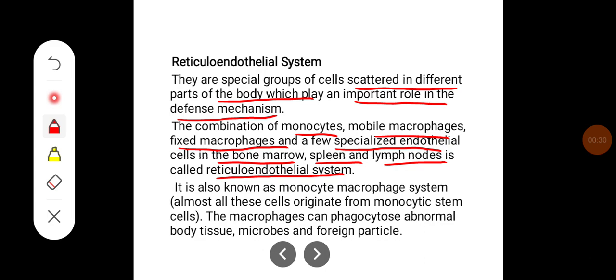It is also known as monocyte macrophage system. Almost all these cells originate from monocyte stem cells. The macrophages can phagocytose abnormal body tissue, microbes and foreign particles.